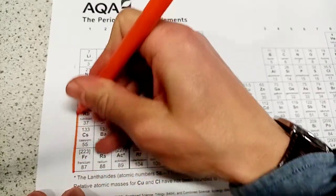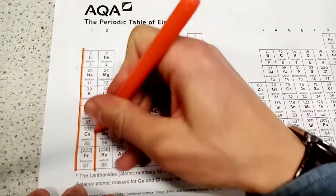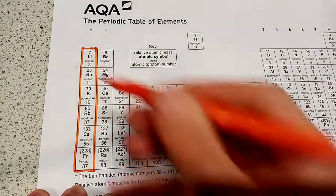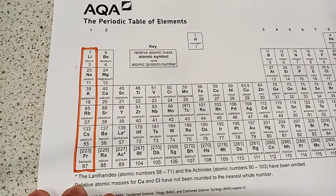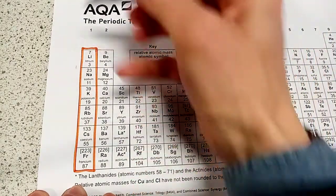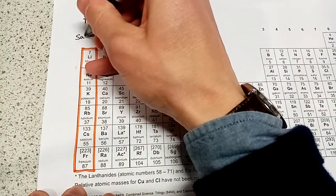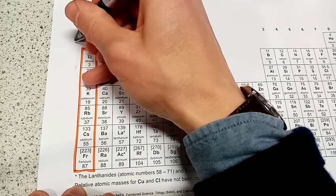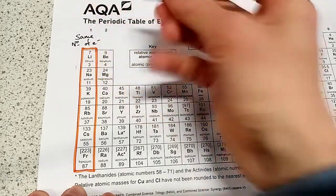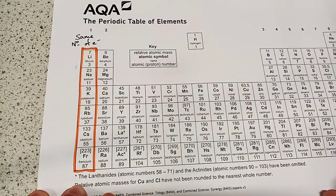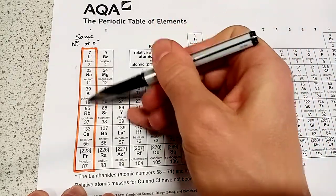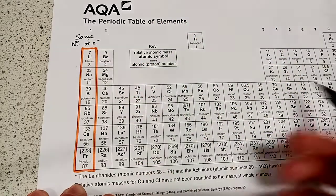So a group is essentially a column, the up and down part of the periodic table. So there's one group for example. And what we know is this: every element in the same group will have the same number of electrons and also therefore the same number of protons. The only thing that changes as you go down the group is that the number of shells increases.